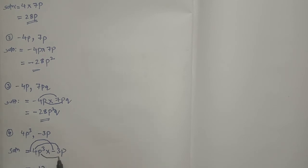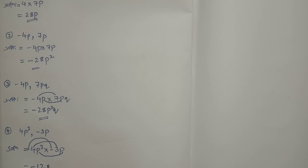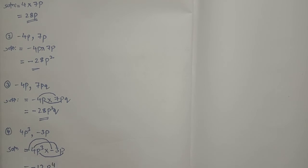Then 4 into 3, 4 threes are 12. Then p³ into p will be p to the power of 4. So this is the answer, p³ into p is p to the power of 4.